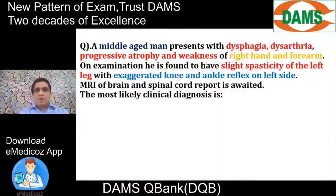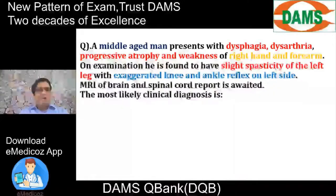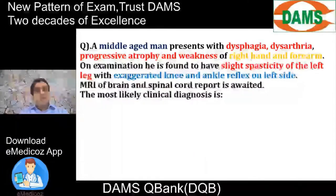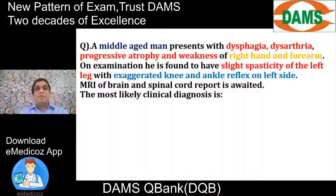There is progressive atrophy and weakness of the right hand and forearm. Atrophy is a sign of lower motor neuron paralysis, so the right upper limb suffers with an LMN paralysis. On the other spectrum, the left lower limb shows spasticity with hyperreflexia.